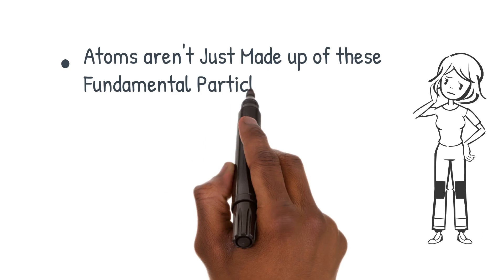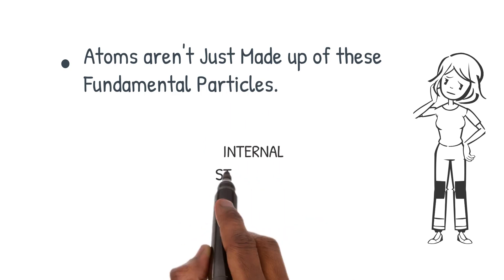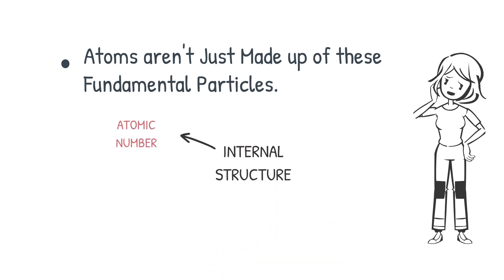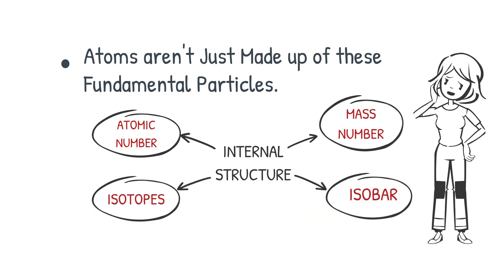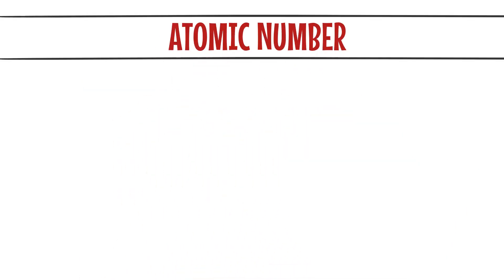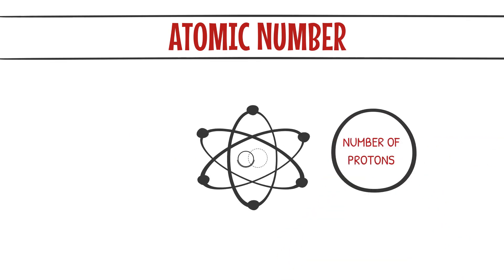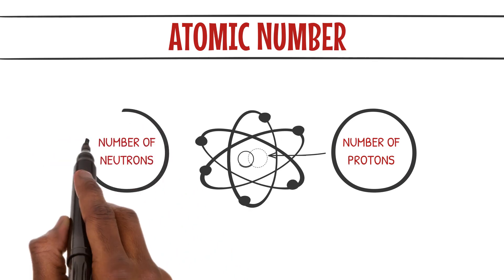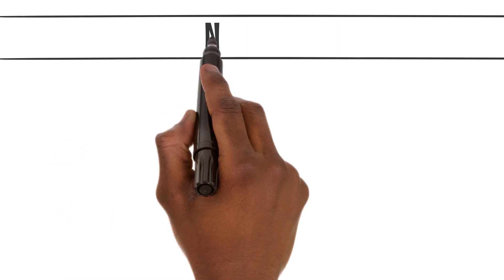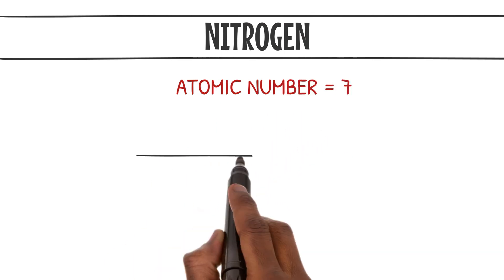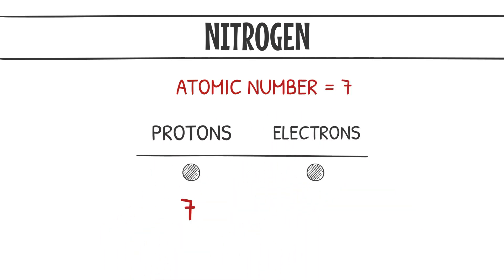Atoms aren't just made up of these fundamental particles. They have an internal structure, and that's where atomic number, mass number, isotopes, and isobars come into play. The atomic number of an element tells us the number of protons in its nucleus. It also represents the number of electrons in a neutral atom. So, nitrogen with atomic number 7 has 7 protons and 7 electrons.